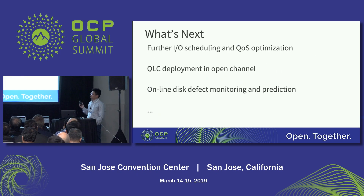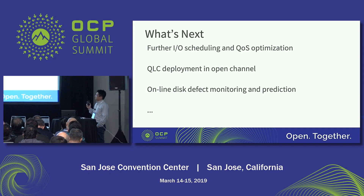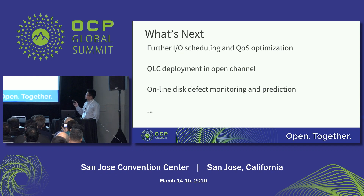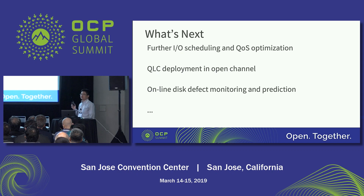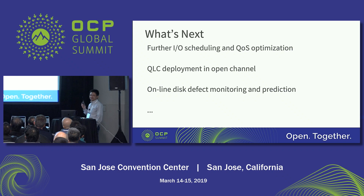Looking at what's next: towards high volume deployment we are further improving IO scheduling and quality of service, and optimizing for further cost reduction by moving to QLC deployment. For stability of online service we are also working on online disk defect monitoring and prediction. We are calling for collaboration across the whole industry — if any of these topics interest you, feel free to contact me after the presentation. Thanks.